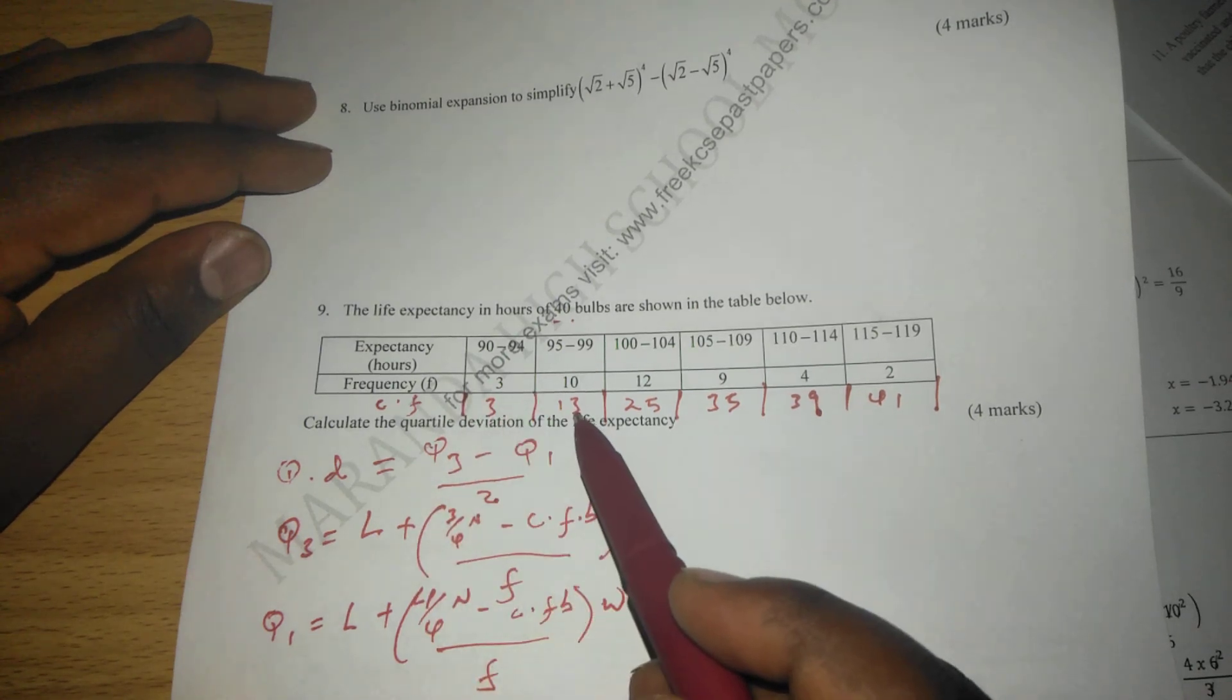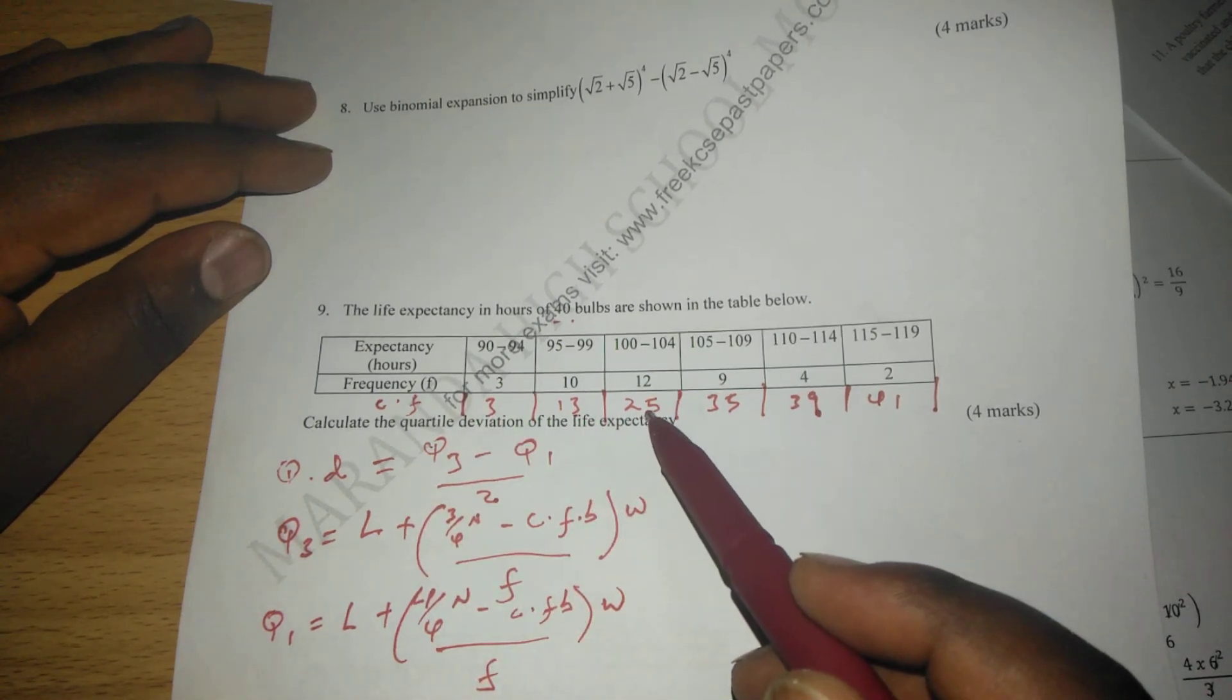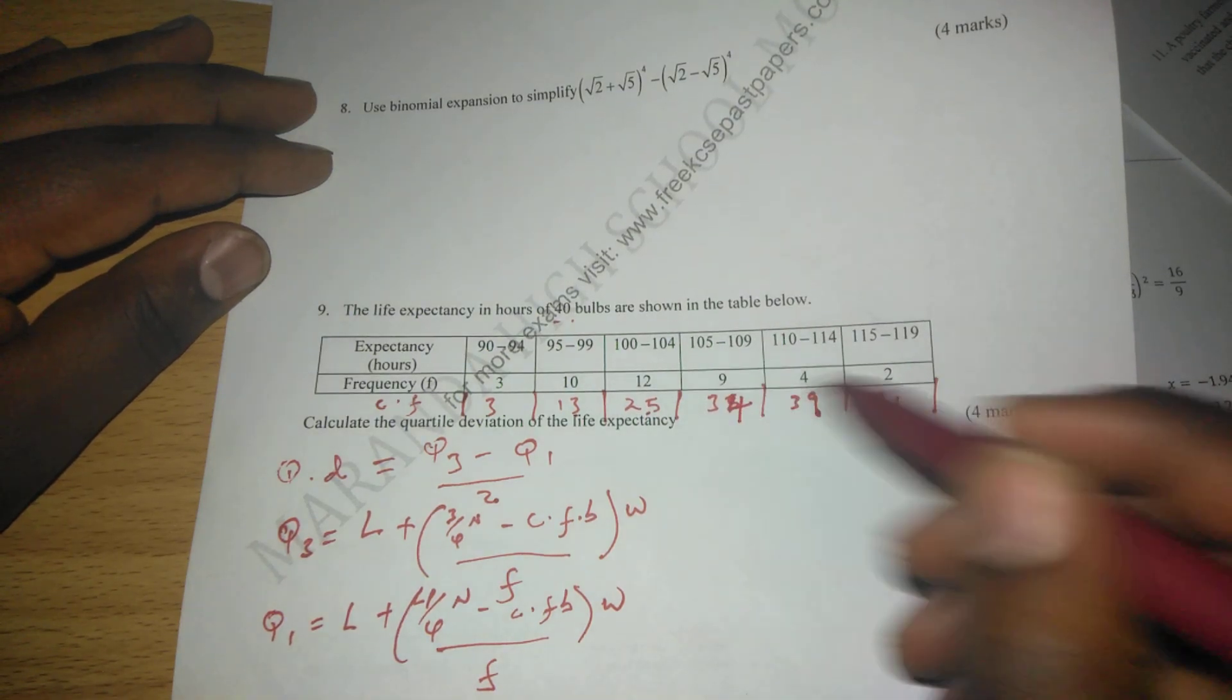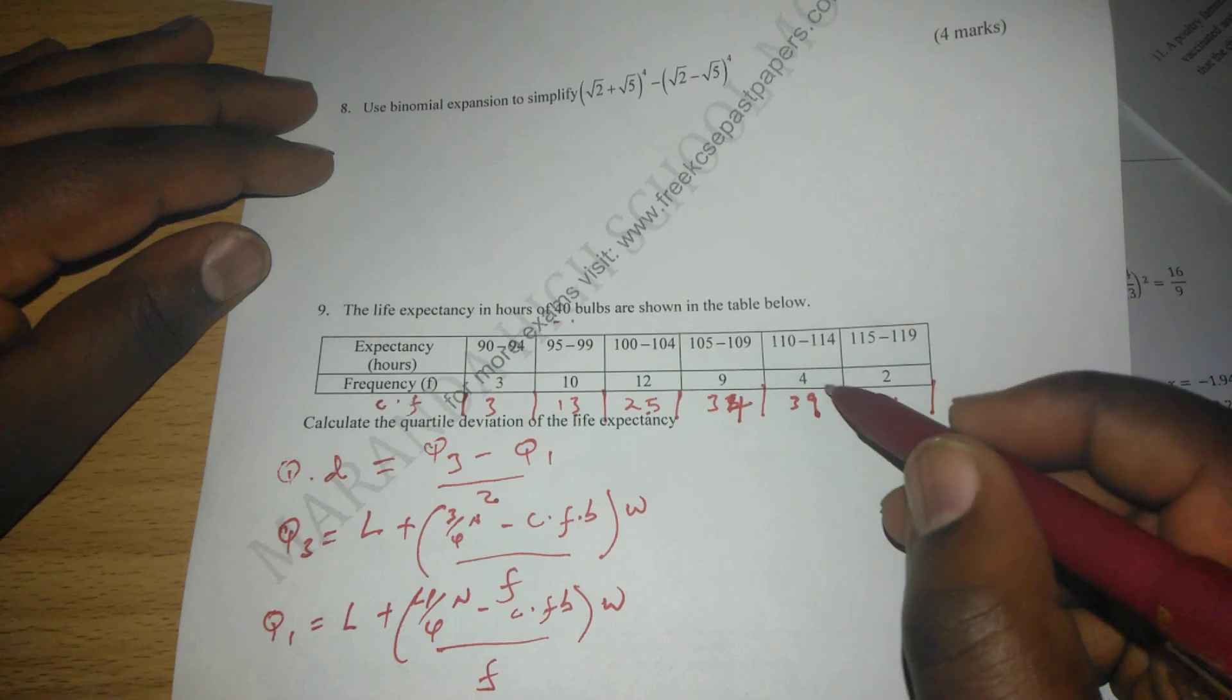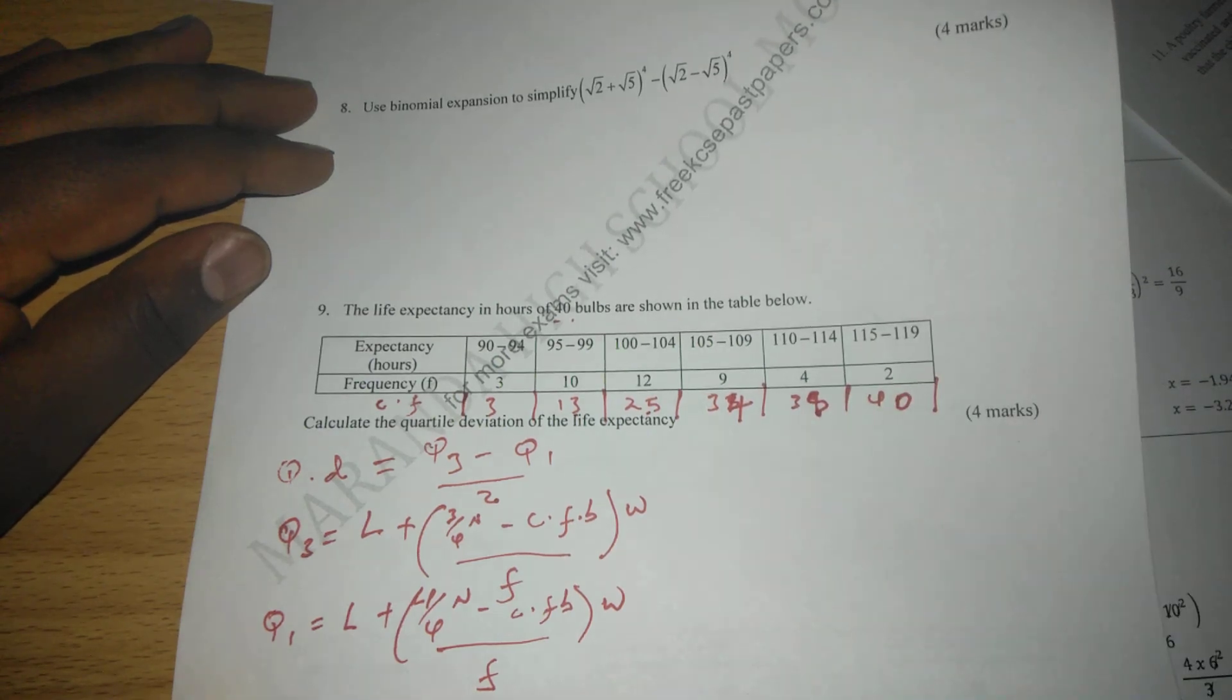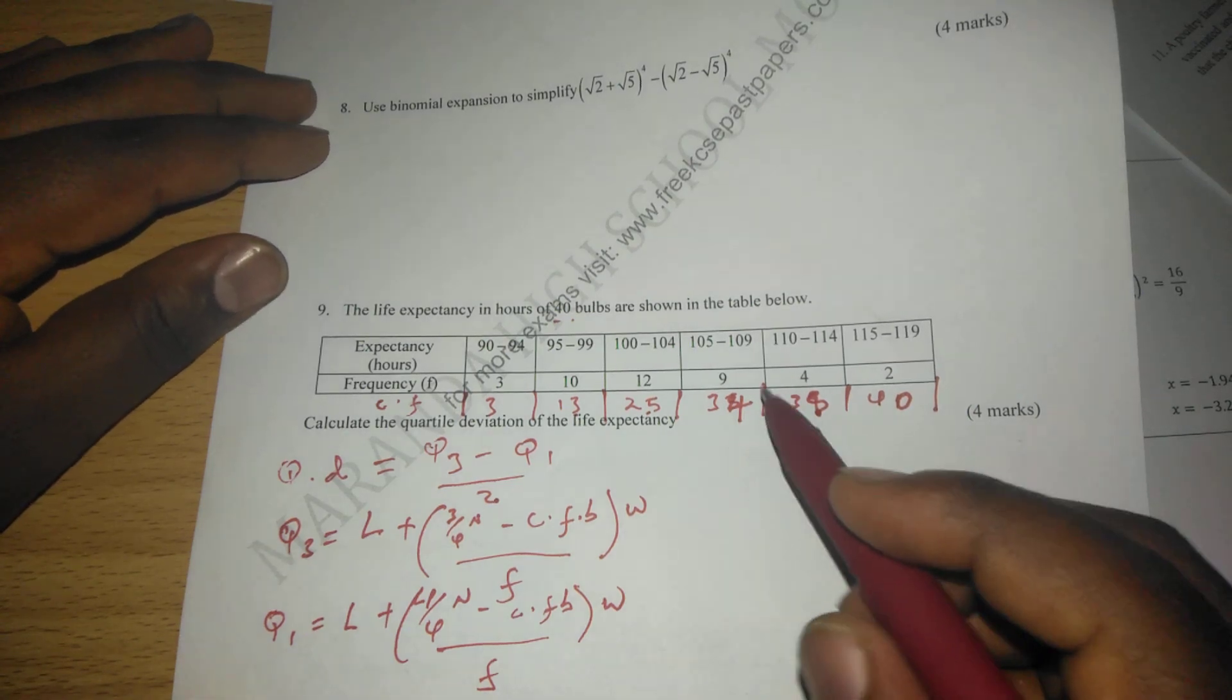3, 13, plus 12, we get 25, so here we are getting 34, sorry, and here we will be at 38, so that this becomes 40. So that is the cumulative frequency. So now we can get Q3, which is going to be 30.